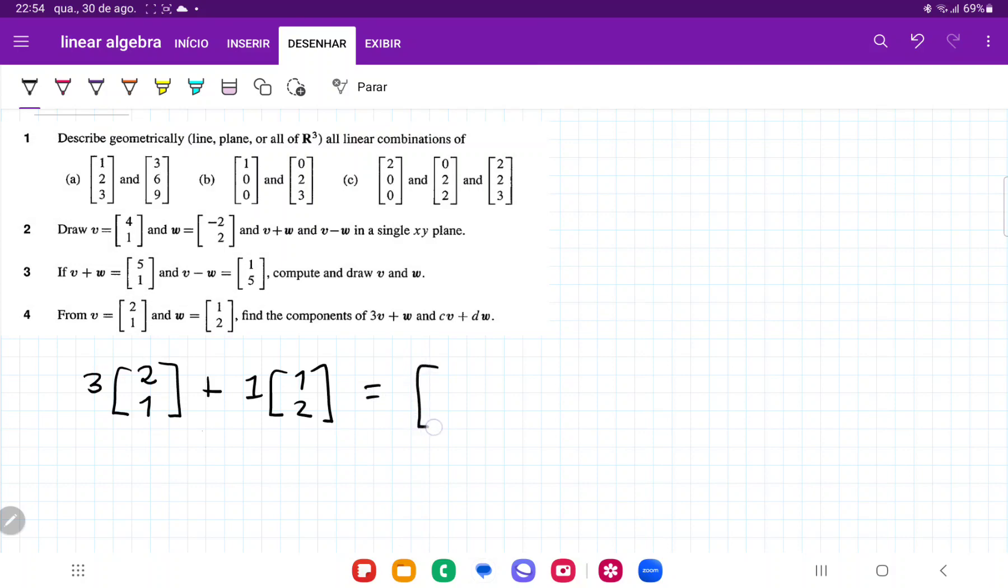So when we do this, we're going to get 3 times 2, right? So that's going to be 3 times 2 plus 1 times 1 plus 1, and then on the bottom it's going to be 3 times 1 plus 1 times 2 plus 2.